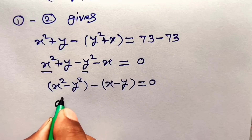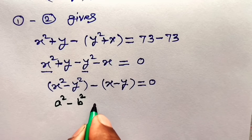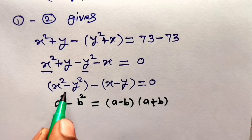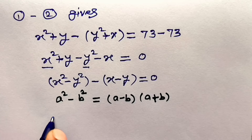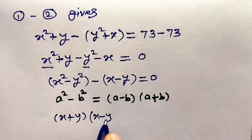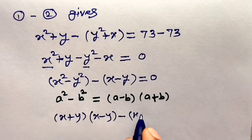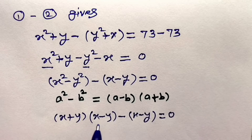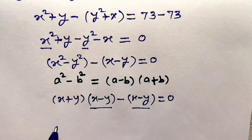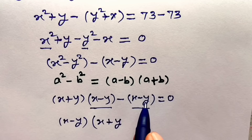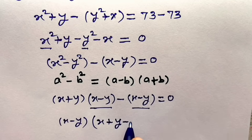Since we know that a squared minus b squared is equal to a minus b, into a plus b, applying this formula here: x squared minus y squared can be written as x plus y, into x minus y. Then taking minus sign and the bracket x minus y, the full expression becomes: x plus y, into x minus y, minus x minus y, is equal to 0. Now from the left hand side we can take the bracket x minus y as common, giving x minus y, into x plus y minus 1, is equal to 0.